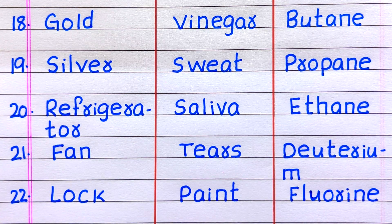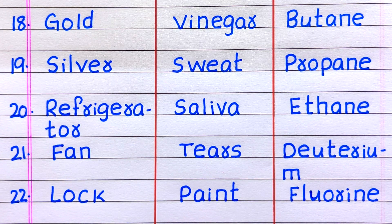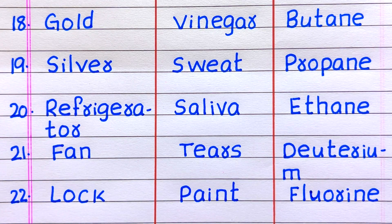Eighteenth example of a solid is gold, nineteenth silver, twentieth refrigerator, twenty-first fan, twenty-second lock. Eighteenth example of a liquid is vinegar, nineteenth sweat, twentieth saliva, twenty-first tears, twenty-second paint. Eighteenth example of a gas is butane, nineteenth propane, twentieth ethane, twenty-first deuterium, twenty-second fluorine.